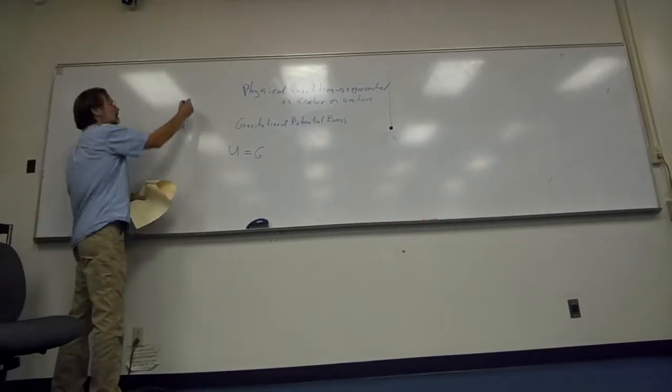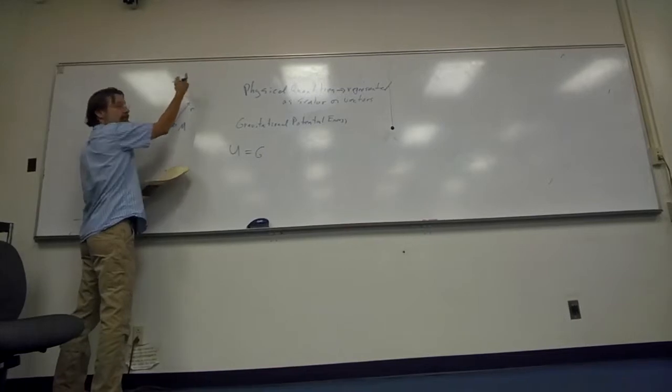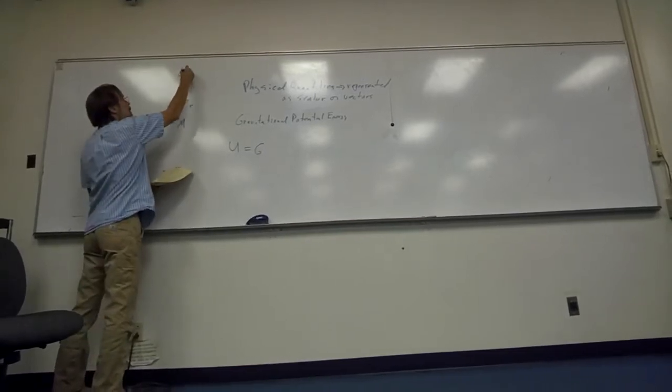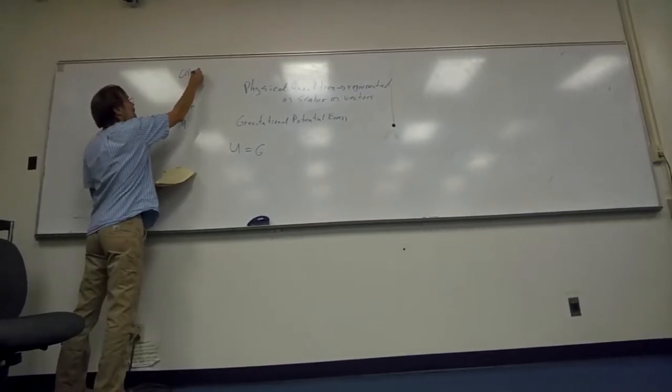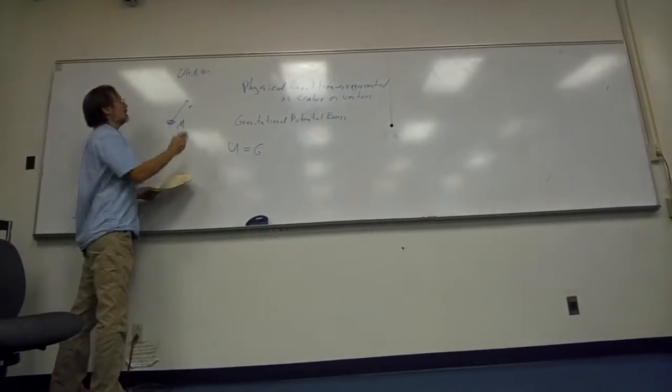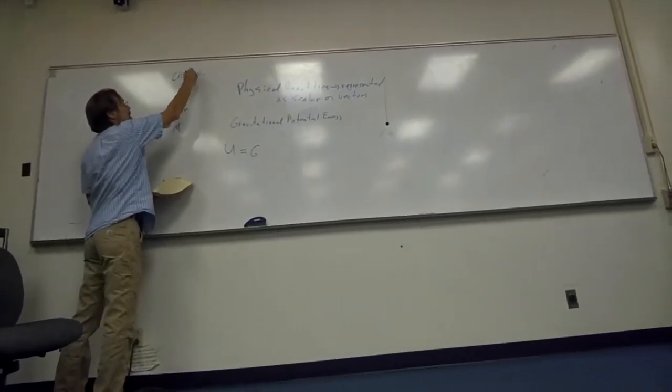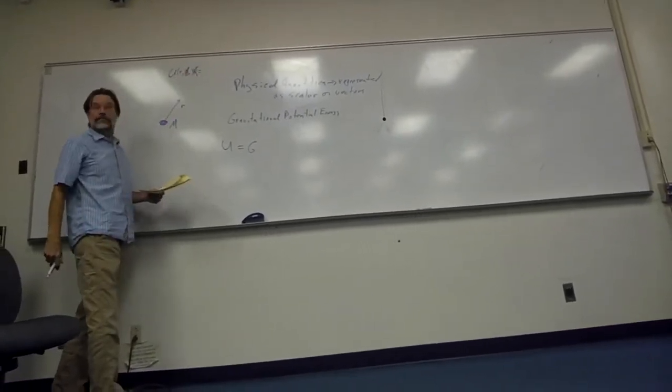to a position here. So you could write this as a spherical coordinate. U of R, theta, theta equals something. But because this is a point, or a point mass, you don't have to worry about those two quantities in the spherical coordinates.